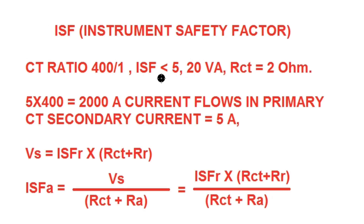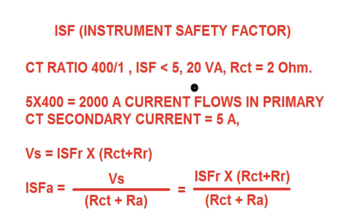ISF is provided in order to safeguard the instruments connected on the CT secondary side for metering class CTs. Most metering instruments — ammeters, wattmeters — are rated for a maximum current of 5 amperes. That is why ISF is mentioned as less than 5 for metering class CTs. If more than 5 times the current flows under rated burden condition, the CT will saturate so that it will protect the instrument connected on the CT secondary side.